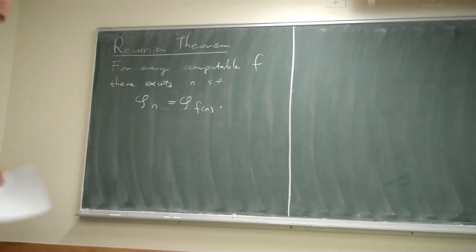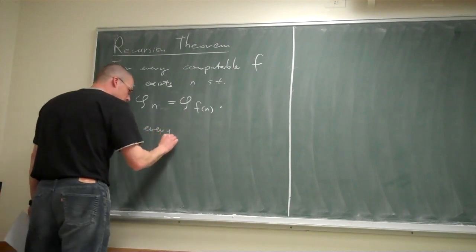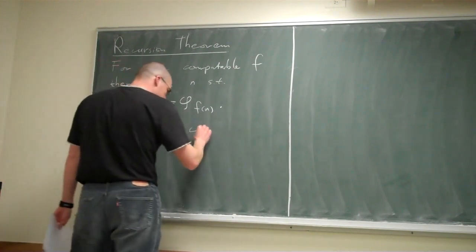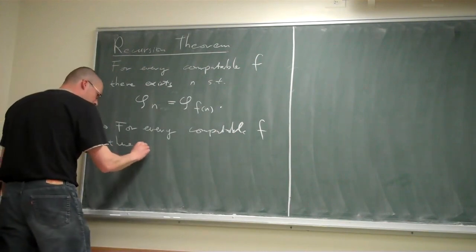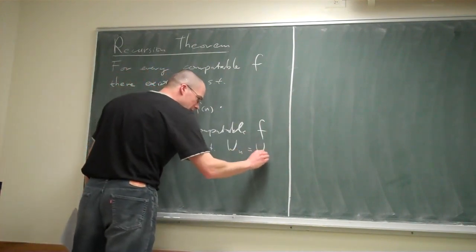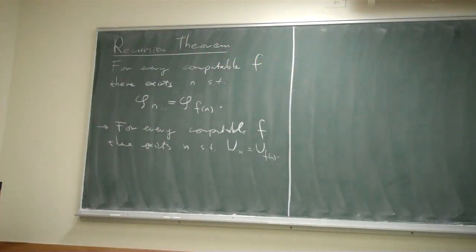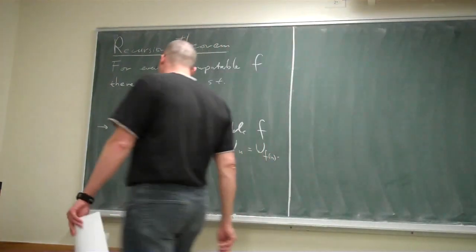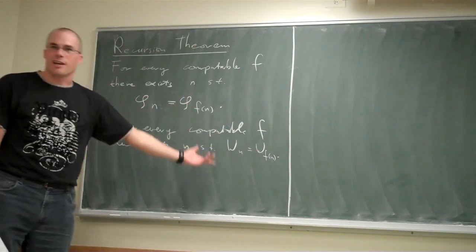Recursion theorem, first application. For every computable f, there exists an n such that W_n equals W_{f(n)}. If you know your definitions, you look at this and say: that's not even an application — it's just reading the recursion theorem in a computably enumerable set context. W_n is the domain of φ_n, W_{f(n)} is the domain of φ_{f(n)}. If these functions are the same, they have the same domains.